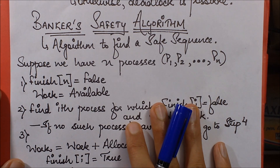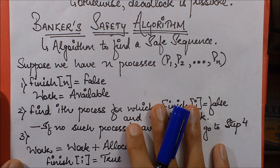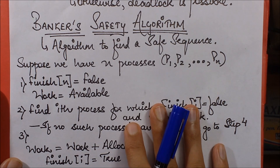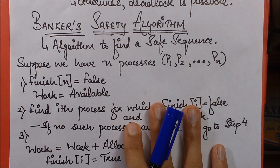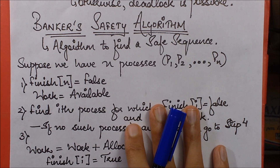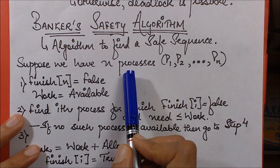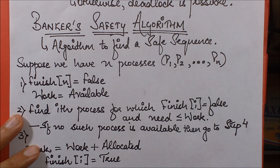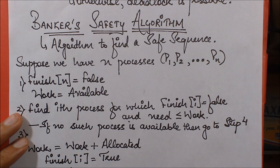The first and foremost algorithm for deadlock avoidance is the Banker's Safety Algorithm. There are many GATE numericals based on the same, which we will discuss in coming videos. The algorithm is first used to find a safe sequence. The notation is that we have a set of n processes represented as P1, P2, ... Pn. There are four steps in this algorithm.